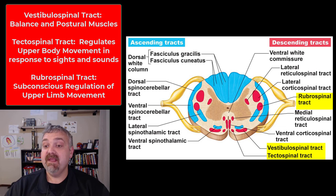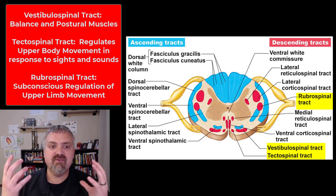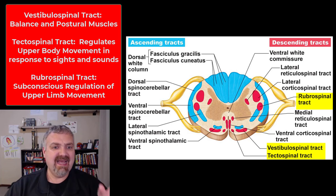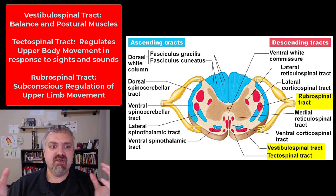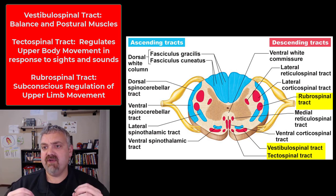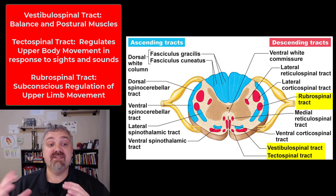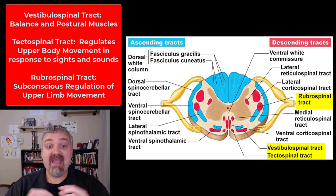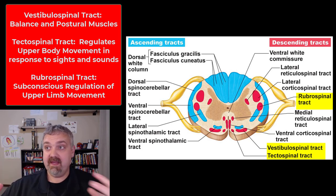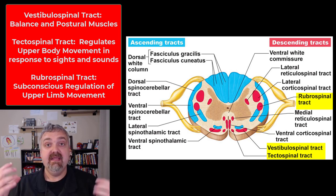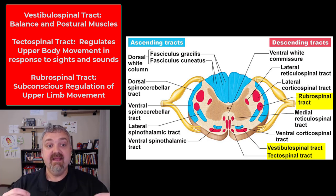The tectospinal tract is going to receive visual and auditory information — like light, movement, and sounds. It's going to be responsible for the subconscious regulation of eye, head, neck, and upper limb position. So if I hear something, I'm going to look towards the sound. If I see something moving, I'll track it. Those are the tectospinal tracts that do those.